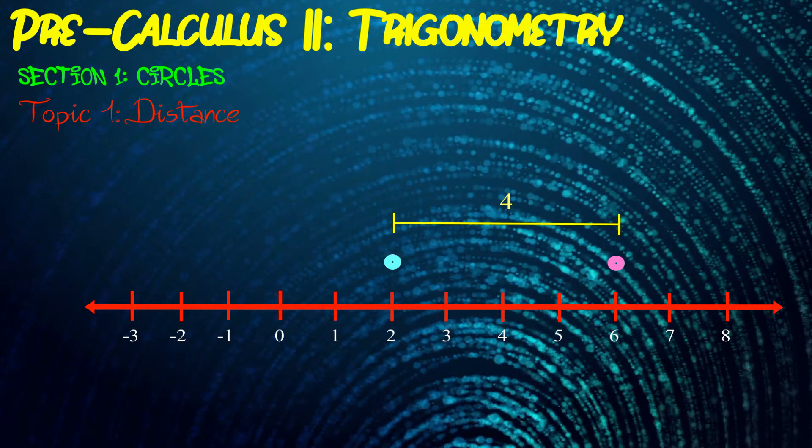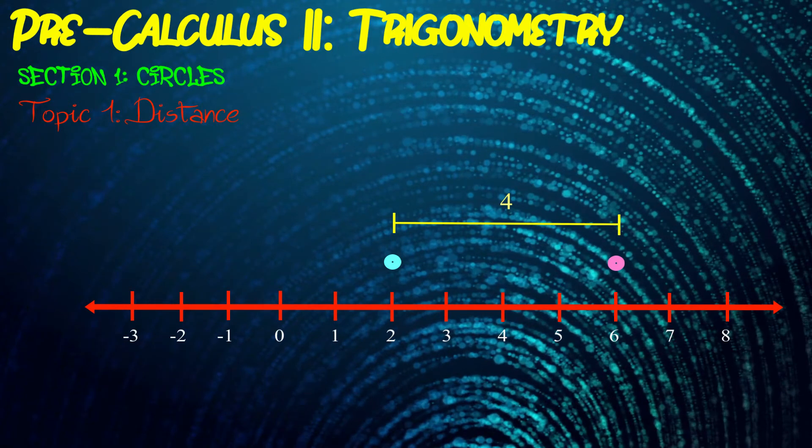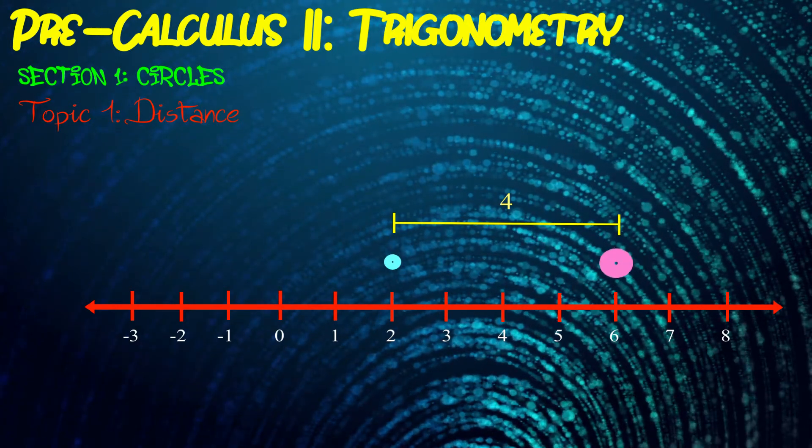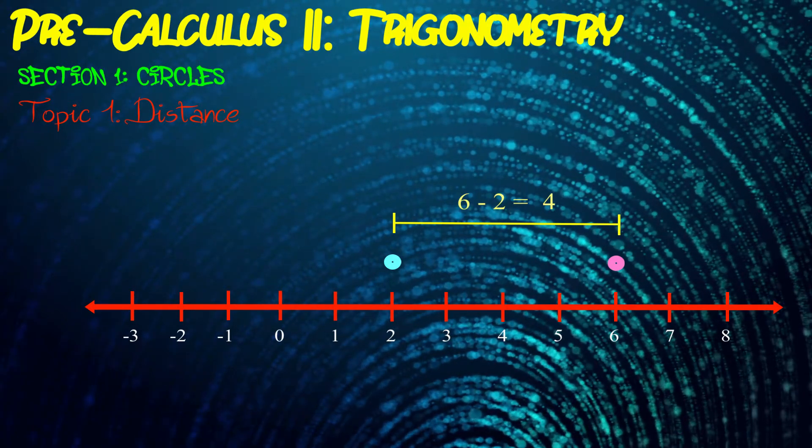For our sake, once we get into harder applications, it'll be useful to take advantage of this subtraction idea. So can we all agree that one of the many reasons that the distance from this dot at two to this dot at six is four is because six minus two equals four? Yeah, good. Okay, moving on.